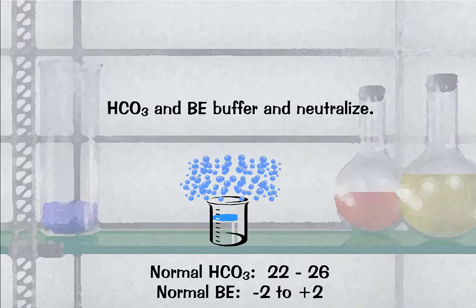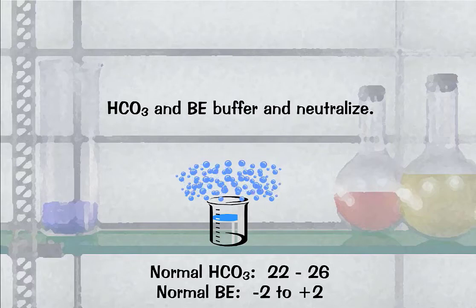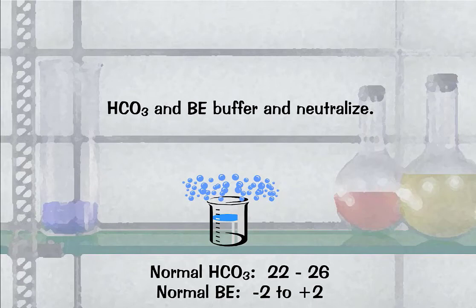Bicarbonate and base excess buffer and neutralize. Normal bicarbonate is 22 to 26. Normal base excess is negative 2 to positive 2.